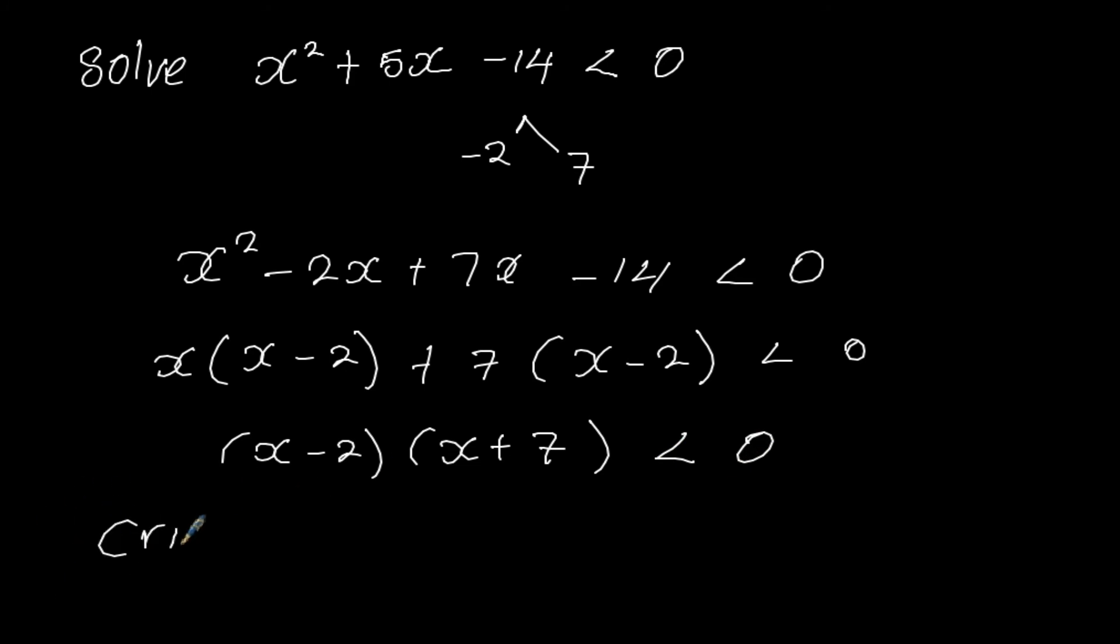From this we can get the critical values. Equate this first bracket to 0, you'll get 2. And equate this second bracket to 0, you'll get negative 7. So these are our critical values.